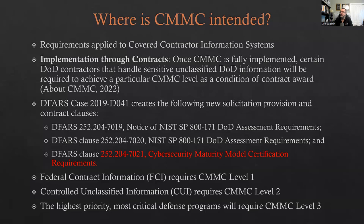That DFARS case also has two other clauses to be aware of: 7019 and 7020. Those are currently in place and can hold up contract awards. If you don't have a Supplier Performance Risk System (SPRS/SBRS) score, it can hold up your contract if those clauses are included. The 7021 clause, however, is not currently in effect.